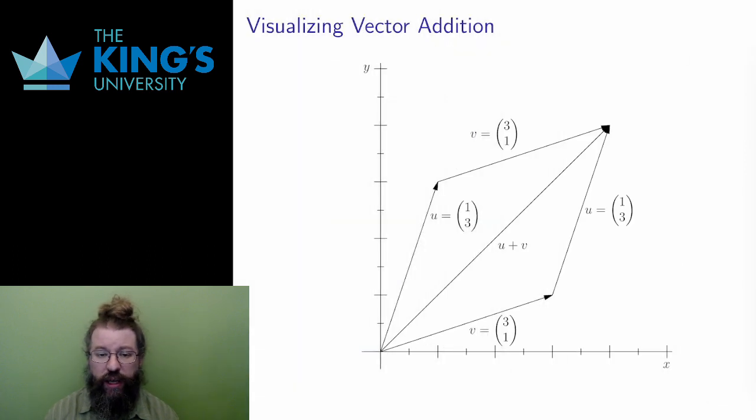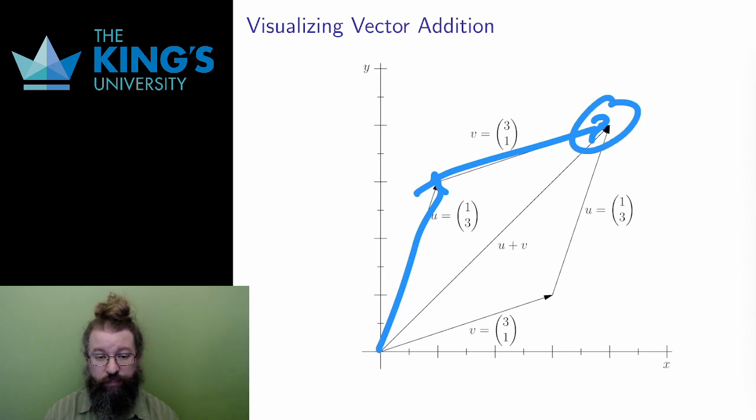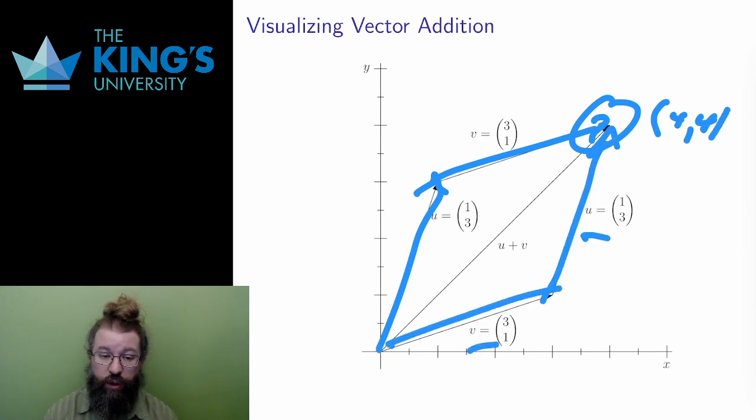What does this addition look like? Geometrically, adding two vectors is connecting the two arrows one after the other. u plus v is first (1,3) and then (3,1) at the end of (1,3), producing the vector (4,4). Notice that I could do this in the other order as well. v plus u means (3,1) first, and then (1,3) at the end of (3,1). And again, I find my way to (4,4). This is addition.